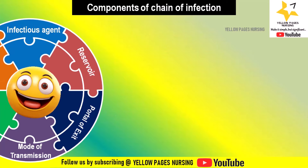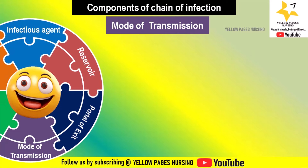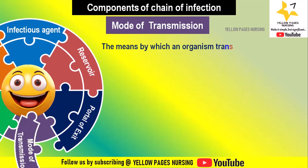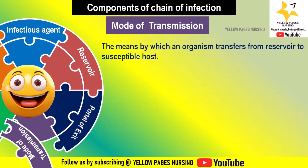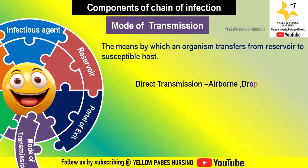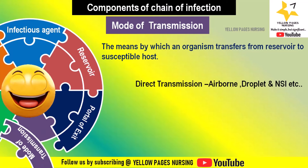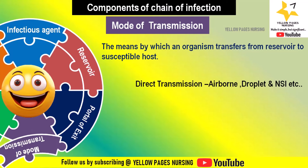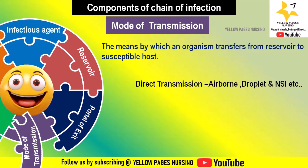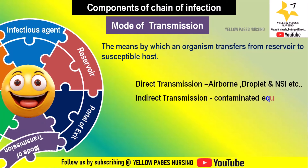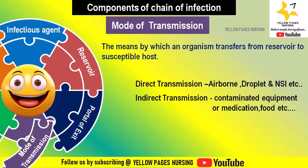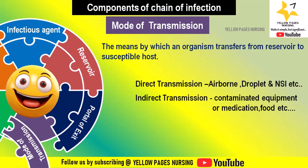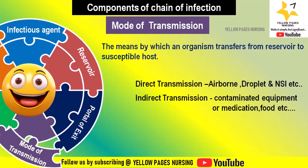Next comes the mode of transmission — the means by which an organism transfers from reservoir to susceptible host. Direct transmission may be through droplet contact, such as skin bite or needlestick or other sharps injury. Indirect transmission may be through fomites, contaminated equipment or medication — for example, multidose vials or single-dose vials — as well as vectors, food, and water.